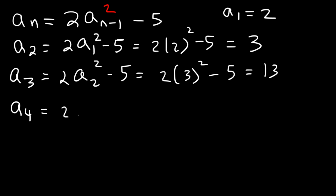a_4 is 2 times the square of a_3 minus 5. a_3 is 13. 13 squared is 169. 169 times 2, that's 338 minus 5. So this is equal to 333.